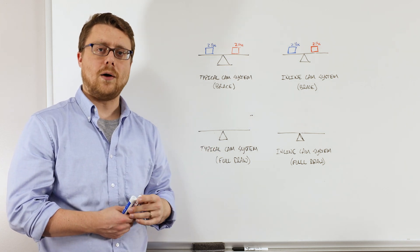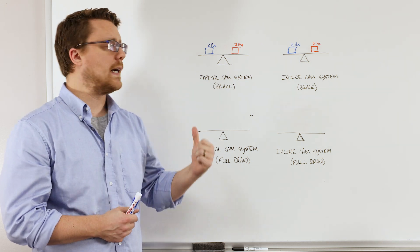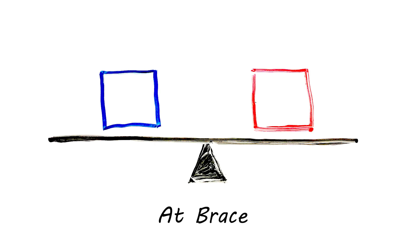A good way to illustrate how we're doing that with the new inline cam system is to visualize a teeter-totter. So on a teeter-totter, let's say we have two weighted boxes, and we'll say one of these boxes represents the string, and the other one represents the cables acting on the bow.